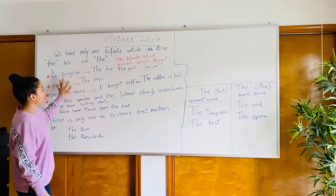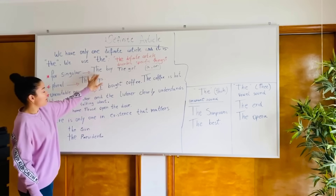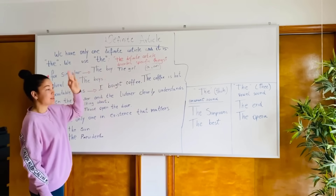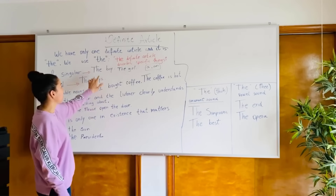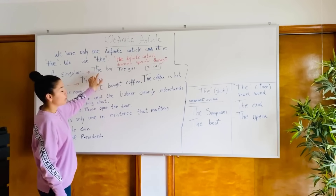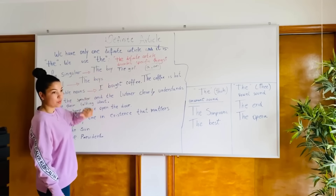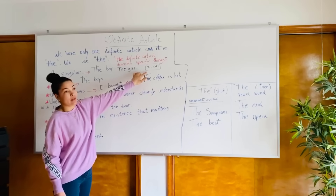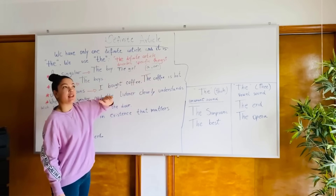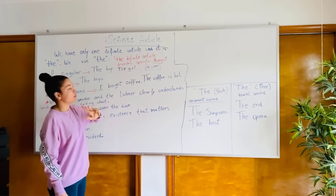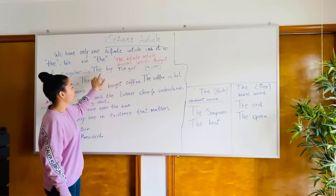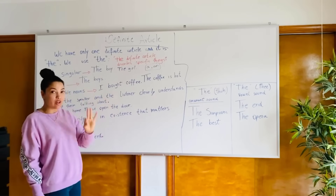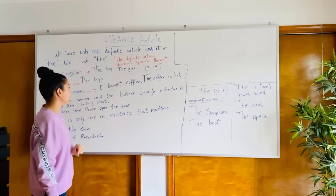For singular nouns: 'the boy' — here we are specifying 'o garoto,' the specific boy. It's not 'a boy,' right? 'A boy' means 'um garoto,' an unspecified boy. When I say 'the boy,' I know exactly which boy — 'the boy.'